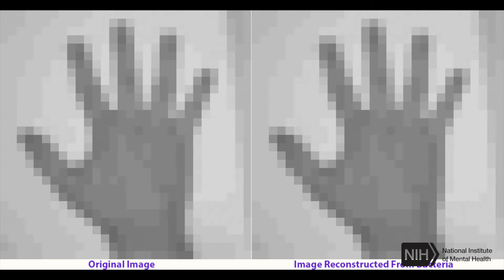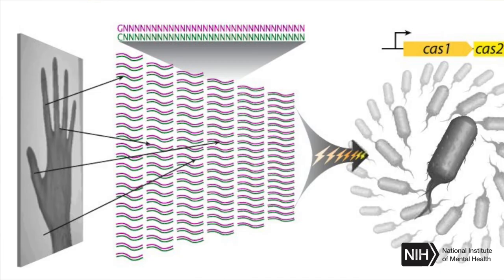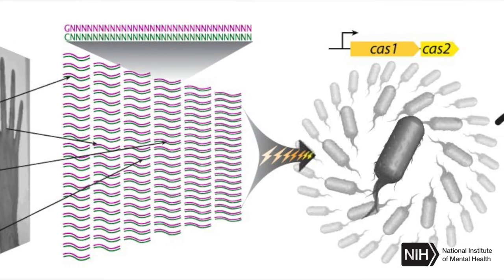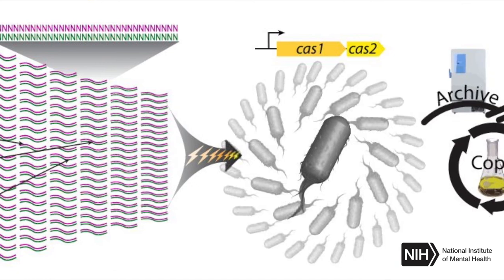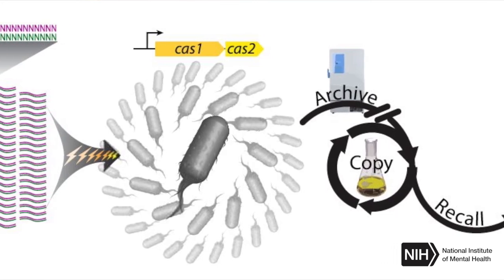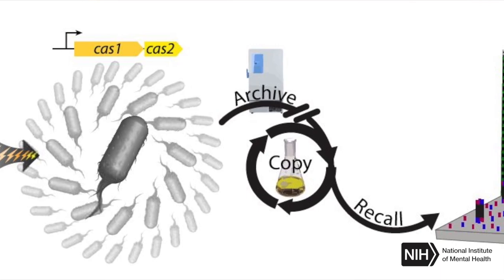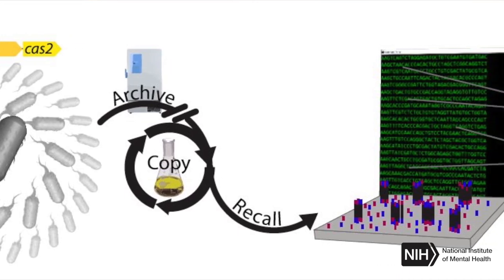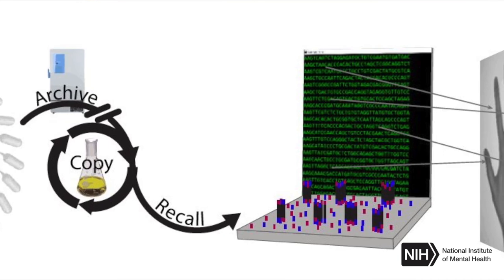We're looking at an image of a human hand. We chose a human hand because it was one of the first images that people put onto the natural world, and since we were encoding images into the natural world in a different way, we decided to recapitulate one of those images. What you're seeing is the source image — what we started with. We then coded all of the pixel values into the nucleotides of DNA, distributed them over a number of strands of DNA, and then put them into bacteria, where the bacteria acquired those sequences and captured them into their own genome.